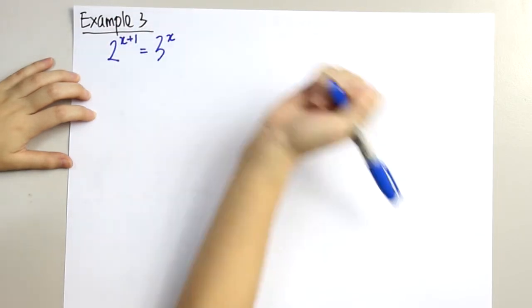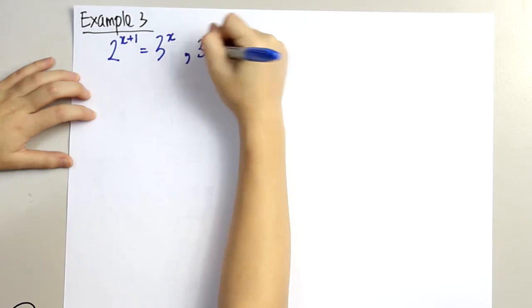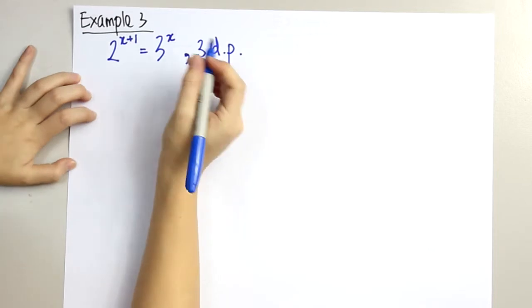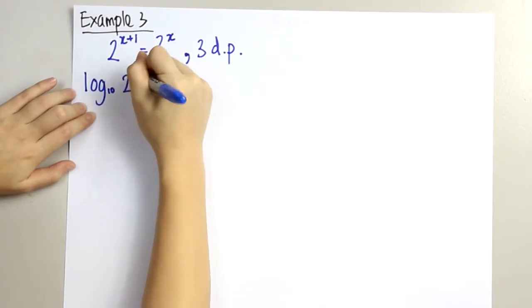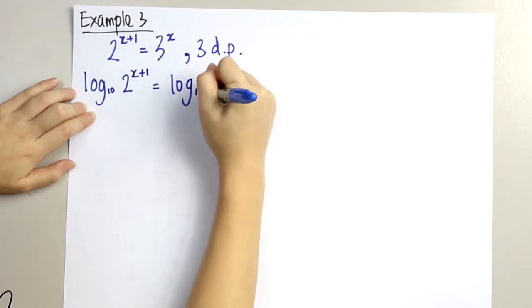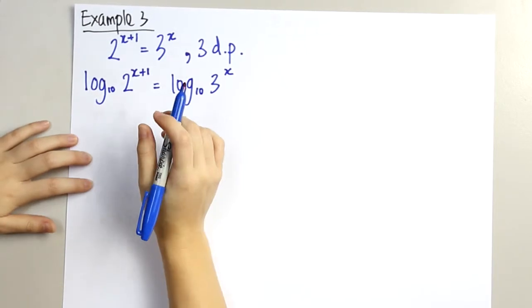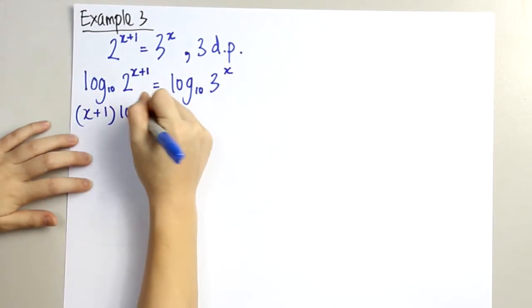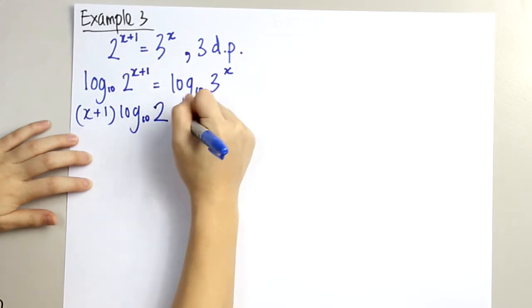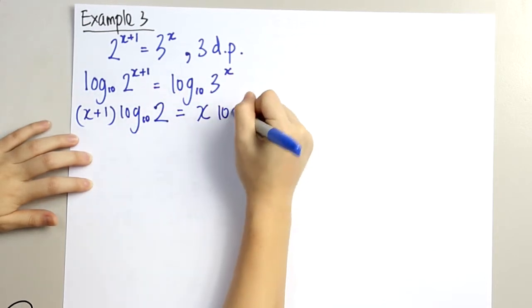Now we go into example 3. For example 3: 2 to the power of x plus 1 is equal to 3 to the power of x, and the question requires you to write the answer in 3 decimal places. What we can do is log both sides — take log 10 on both sides. So log 2 to the power of x plus 1 equals log 3 to the power of x. According to the laws of logarithms, the power can be placed in front to multiply the log: (x plus 1) times log 2 equals x times log 3.